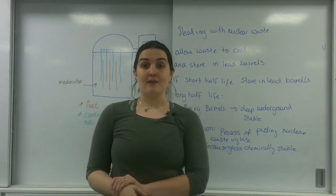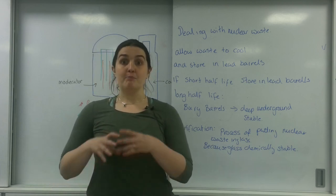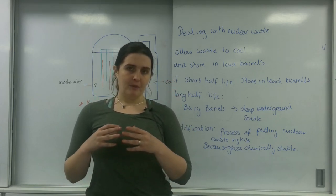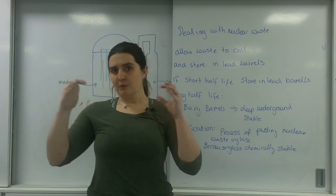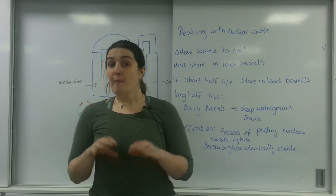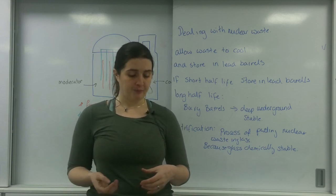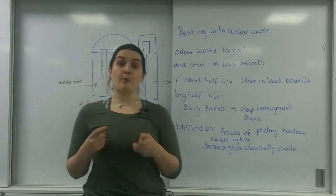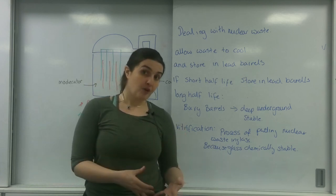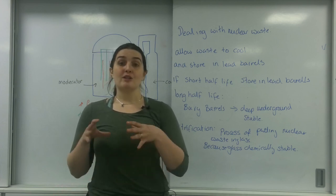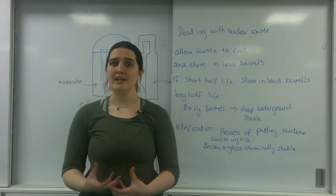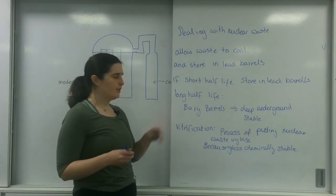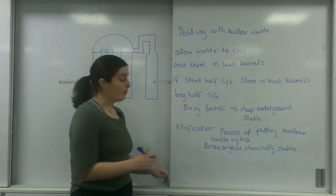If it has a long half-life, this is when it gets a little bit interesting. We actually have to consider how we store this for the indefinite term. So burying it deep underground in barrels, and it has to be deep underground, not just like a deep underground, to make sure that any seismic shift from building or above it don't affect it, but also to make sure that we're not affecting any of the water table. The other way we can do that is we can use vitrification, which is the process of putting nuclear waste in glass. This is much more preferable but more expensive because silica is so stable, it won't chemically corrode underground.